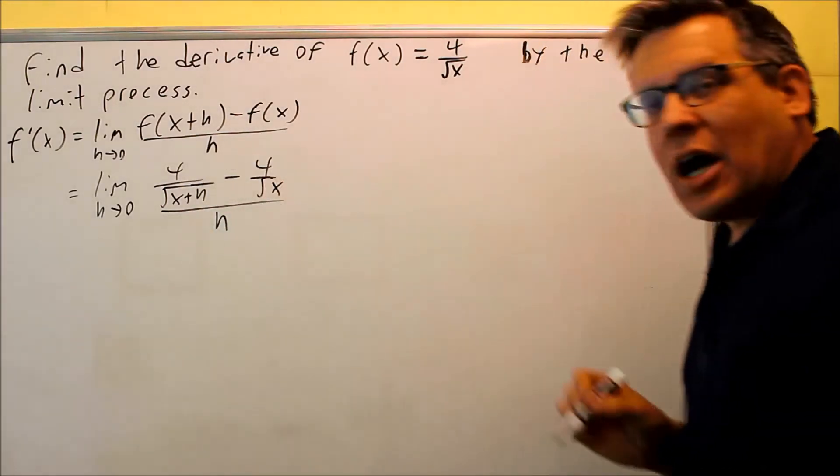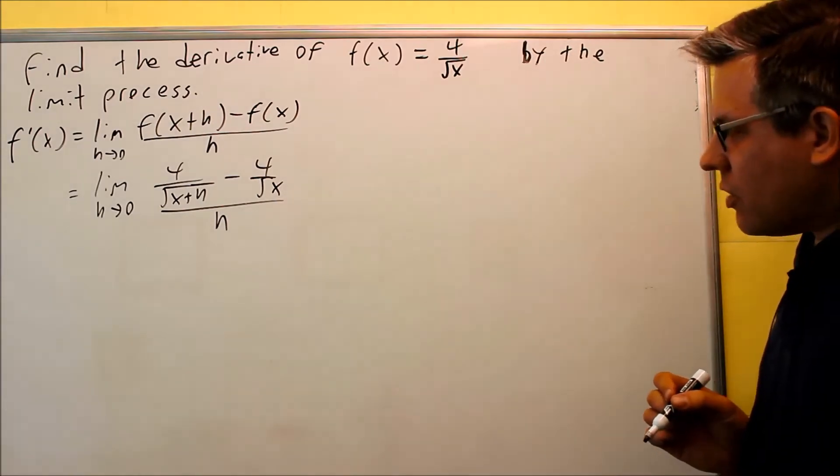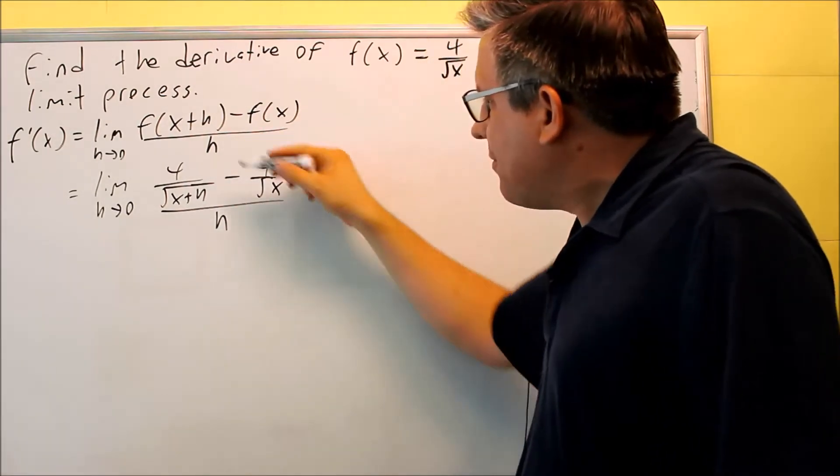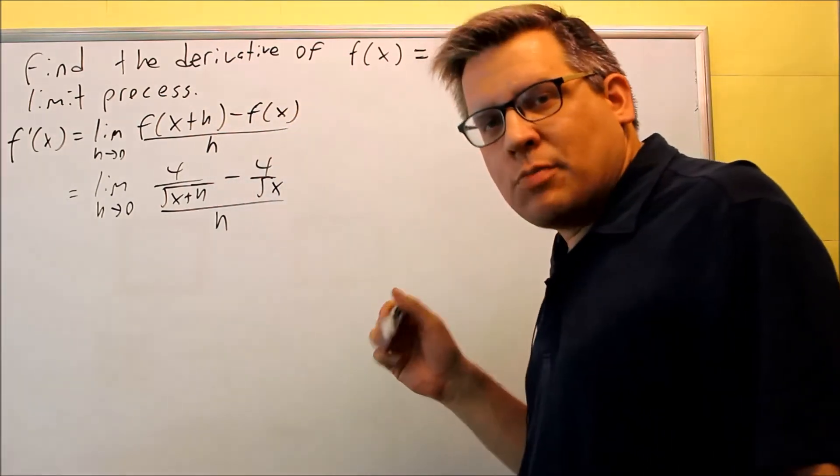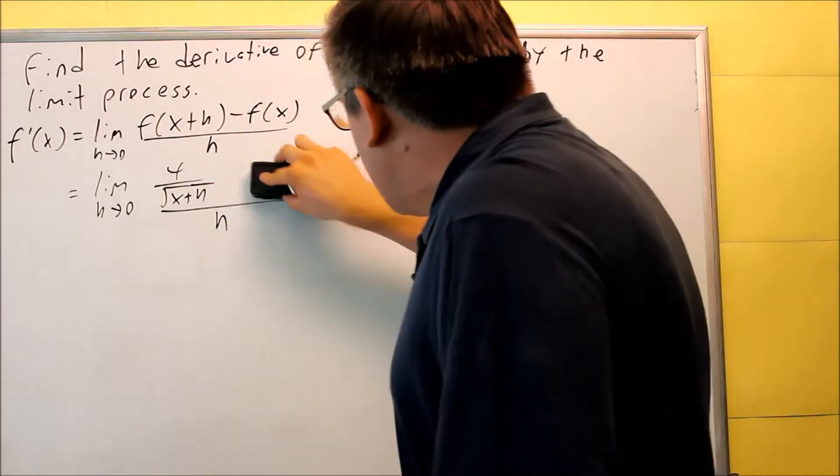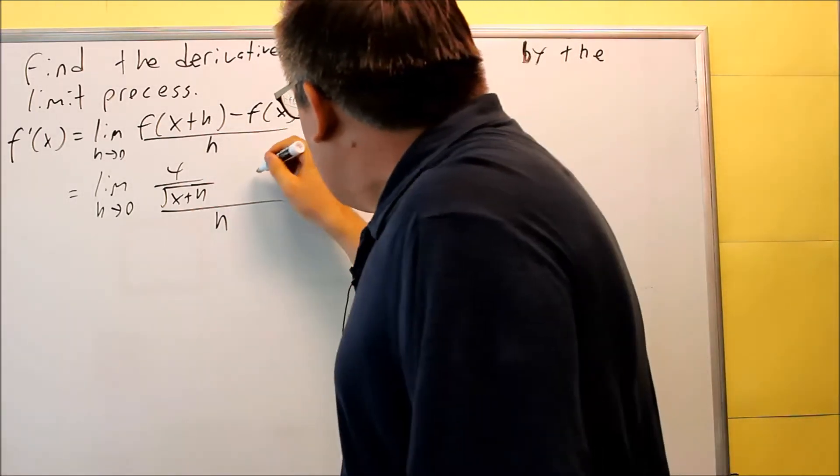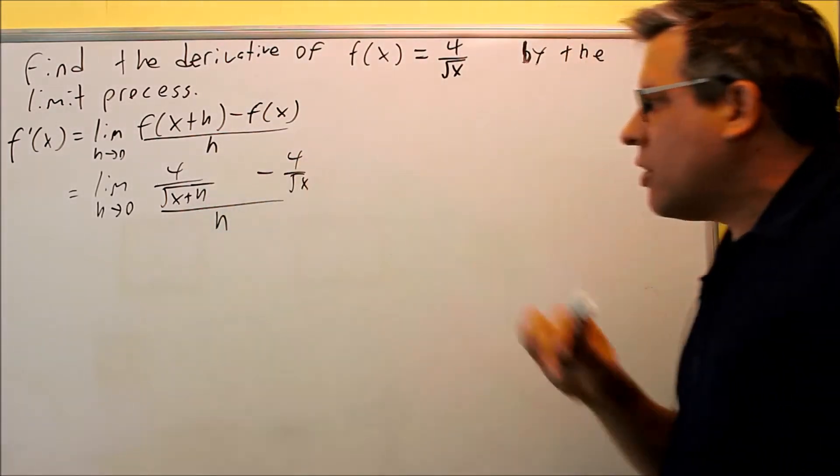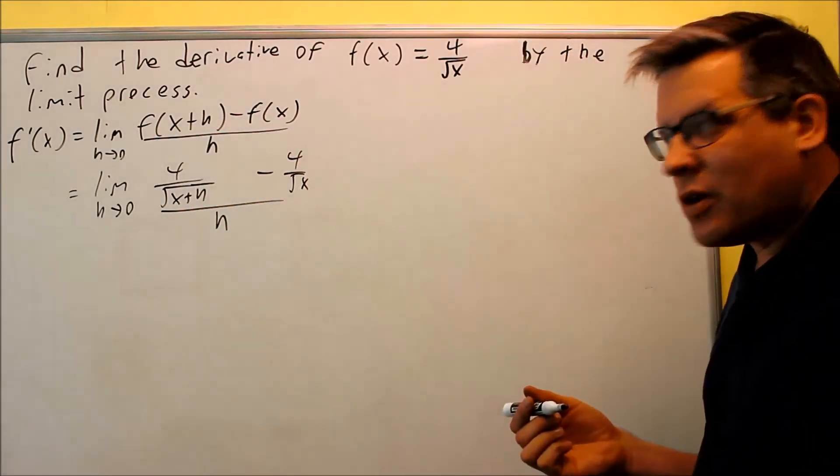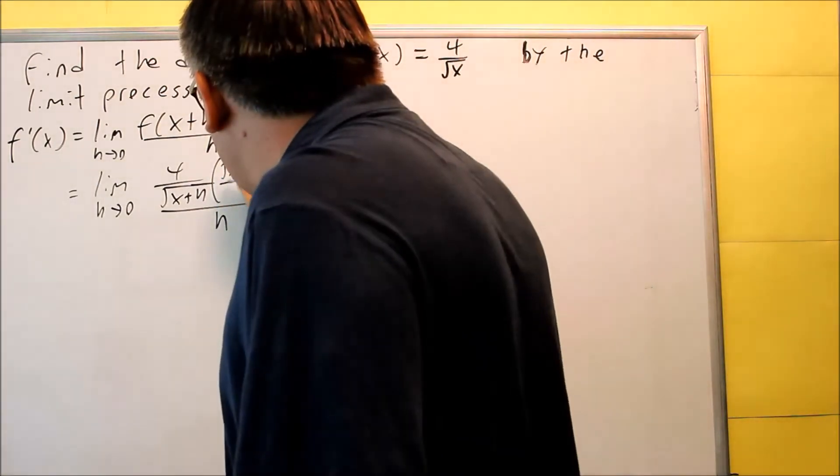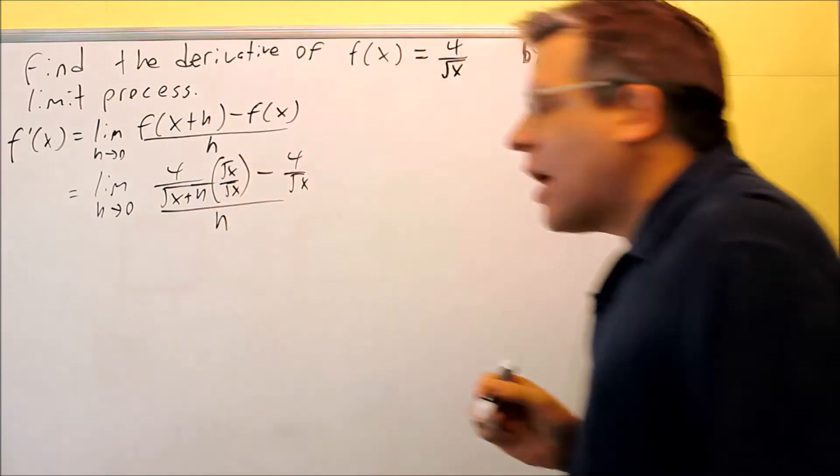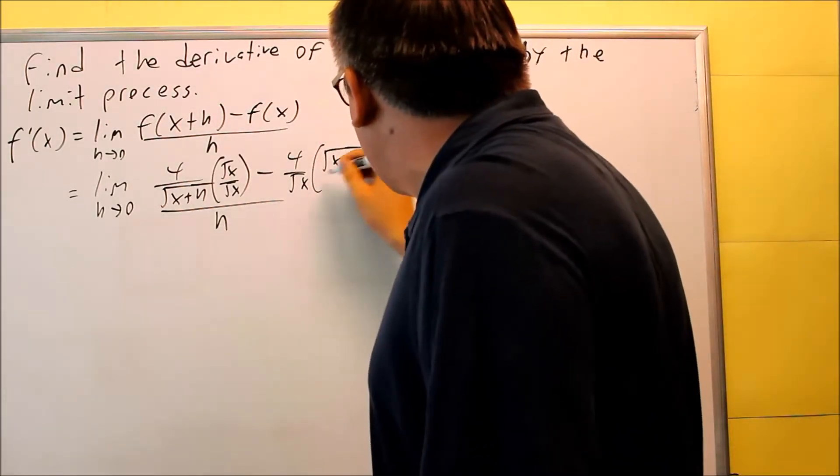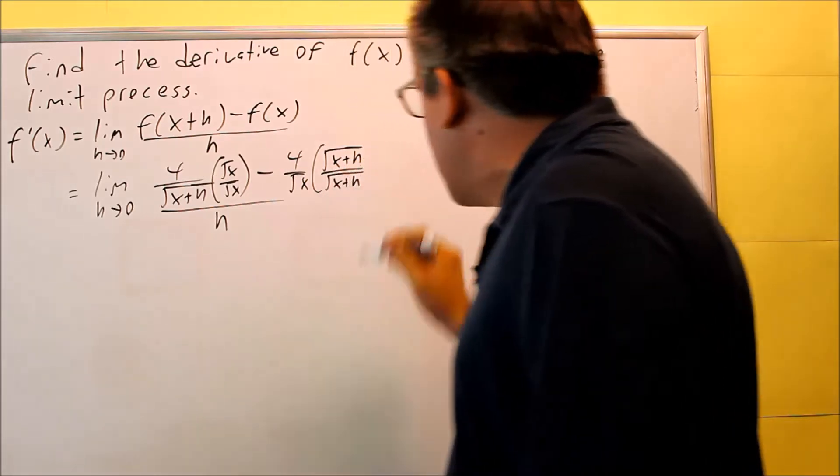We need to get common denominators with each of these. So what I'm going to do is multiply both by what's missing in order to get common denominators. So let me go ahead and write some more space here. So here's what I had originally. I want to get both the denominators to be square root of x times the square root of x+h. This one requires square root of x over square root of x. This one requires us to do square root of x+h over square root of x+h.